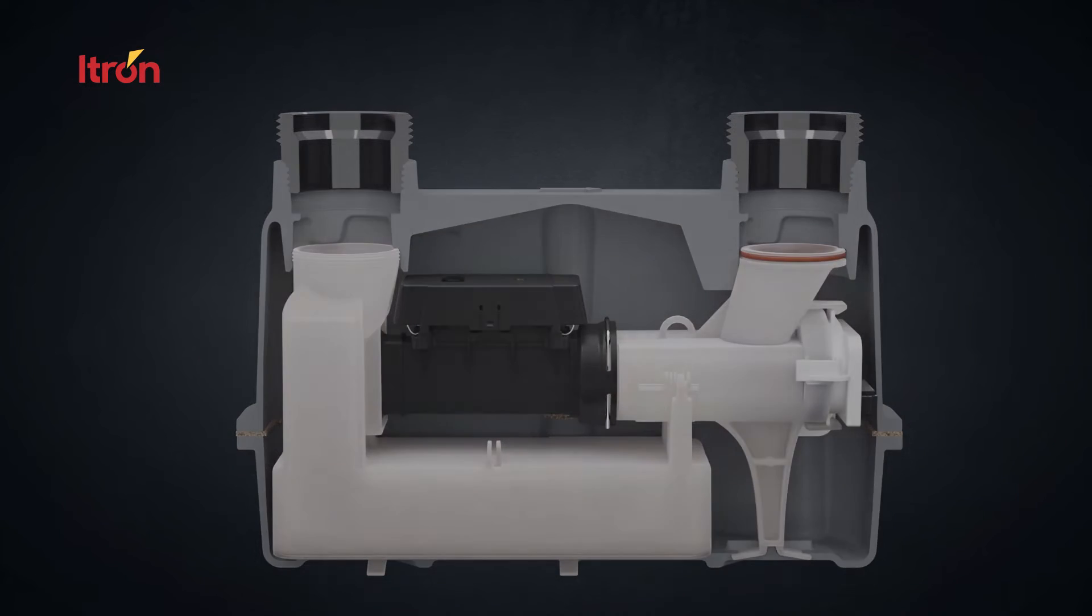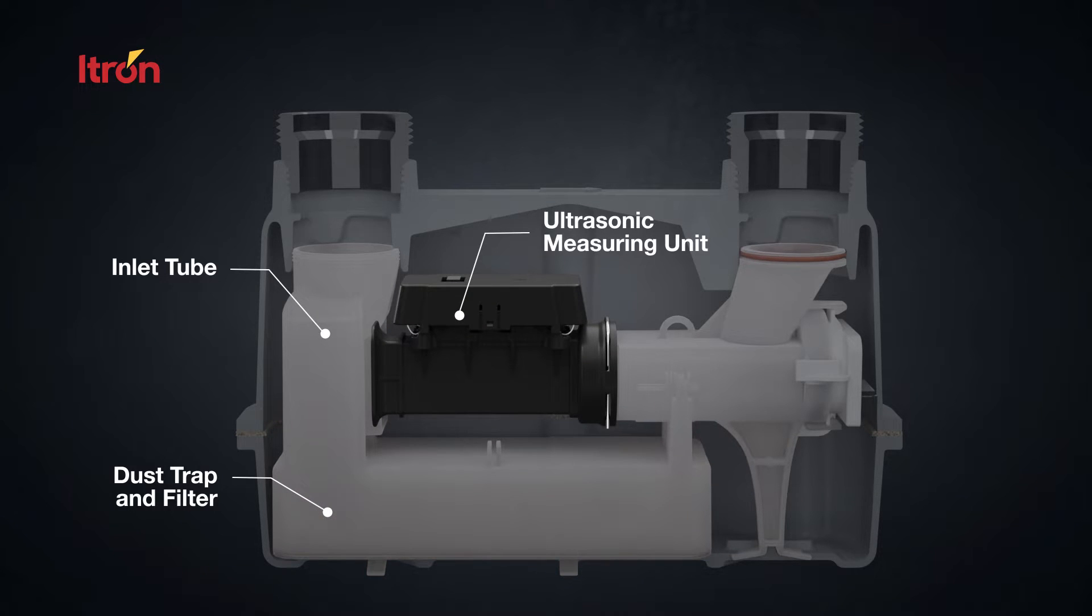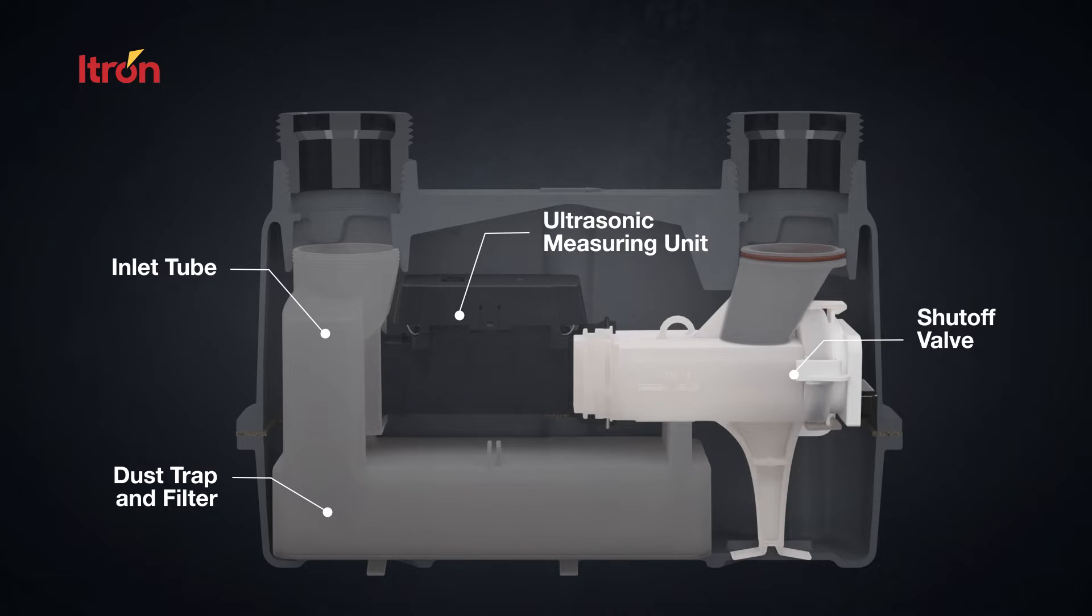The INTELIS gas meters are comprised of an inlet tube, dust trap and filter, ultrasonic measuring unit, shut-off valve, and outlet tube.